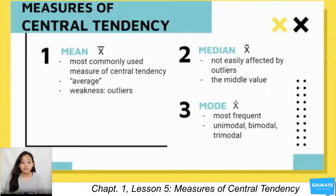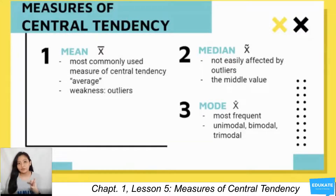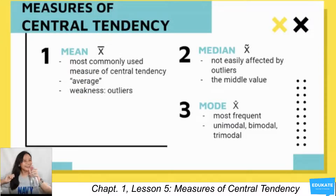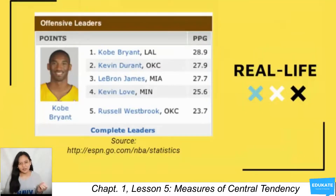Some datasets have unimodal, bimodal, or trimodal distributions. If you have one mode, that is a unimodal dataset. If you have two modes, it is bimodal. If you have three modes, it is trimodal. If there are more than three modes, that is called a multimodal dataset.